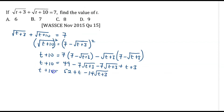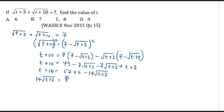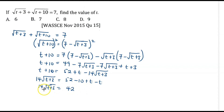So we have t plus 10 equal to 49 plus 3 plus t minus 14 root of (t plus 3). Simplifying: 49 plus 3 gives 52, so t plus 10 equals 52 plus t minus 14 root of (t plus 3). Transposing terms so that the radical is on its own: 14 root of (t plus 3) equals 52 minus 10 plus t minus t, giving us 14 root of (t plus 3) equals 42, since t minus t is zero.